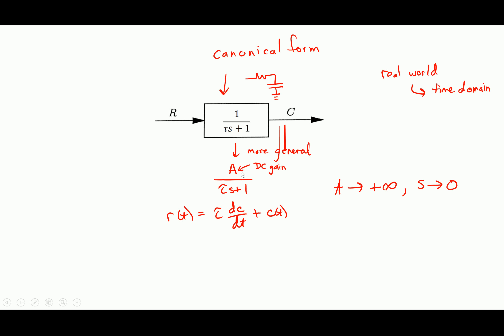If I was looking at the differential equation that goes with the more general form, both terms would have a gain applied. In that case, when the derivative is dead — the transient response is over — C of T equals A times R of T.